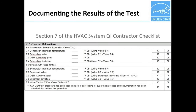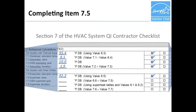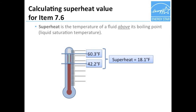For systems without a TXV, items 7.5 through 7.8 are completed instead. The process is very similar to that used for the subcooling section. For item 7.5, Rob records the saturation temperature in the suction line after the evaporator — reported on the second screen, but could have been determined manually using a pressure-temperature chart. For item 7.6, the actual superheat value from the third screen is recorded. This value could also have been calculated by subtracting the measured suction line temperature in item 6.6 from the saturation temperature in item 7.5.